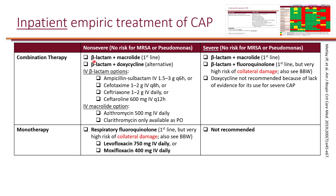For non-severe patients without any risk factors for either MRSA or pseudomonas — patients who are sick enough to be admitted but not classified as severe — because hospitalized patients often cannot tolerate oral medications, these agents are given IV initially, although if they can tolerate oral it is okay. The very first doses of antibiotics are often given as IV in the hospital. IV antibiotics also help with absorption, getting the antibiotic to the site of infection as fast as possible.